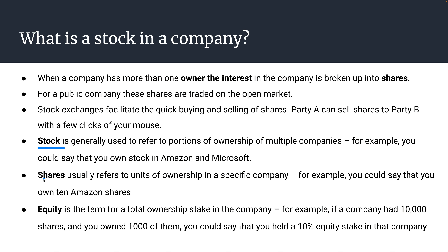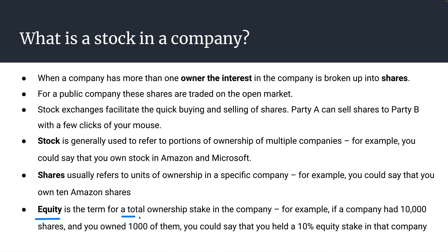The terms stock and shares are often used interchangeably. For example, if you say you own stock in many companies, you're just indicating that you own shares — not telling people how much you have. You just own stock in different companies, like Amazon and Microsoft. When you talk about shares, you typically talk about the unit of ownership in a specific company. For example, you could say you own 10 shares in Amazon, meaning you own 10 units of ownership. The term equity often refers to the total ownership in a company. For example, if a company had 10,000 shares and you own 1,000 of them, you could say you own 10% of the company — a 10% equity stake.